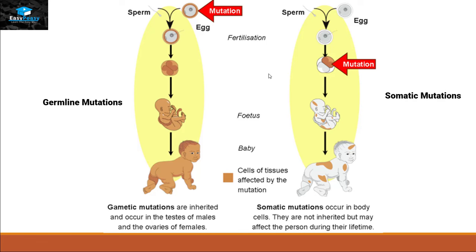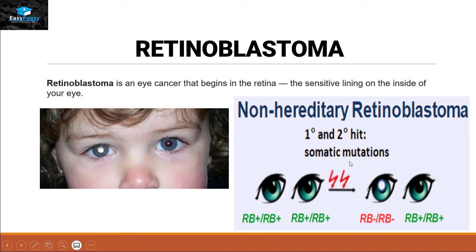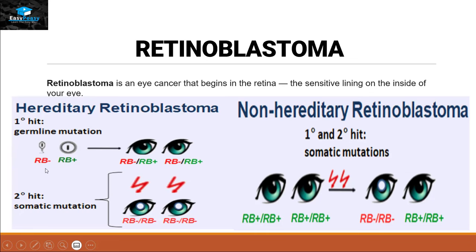Let's take a real example of germline mutation and somatic mutation. The example is retinoblastoma — an eye cancer that begins in the retina, the sensitive lining on the inside of the eye. It can be non-hereditary, where the mutation occurs after fertilization, so one child may suffer from the disease but another will not. It can also be hereditary: if it is present in the germline, it can pass that disease to children as a carrier, and carriers will pass the disease to their kids in the second generation. So retinoblastoma is a perfect example of germline mutation and somatic cell mutation.